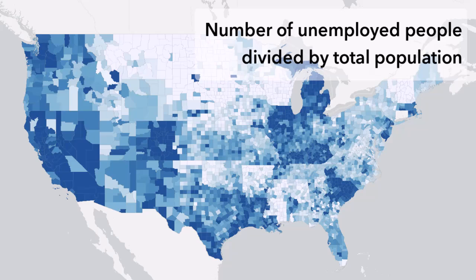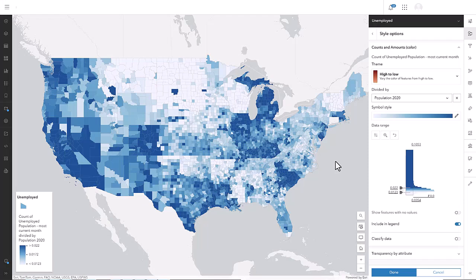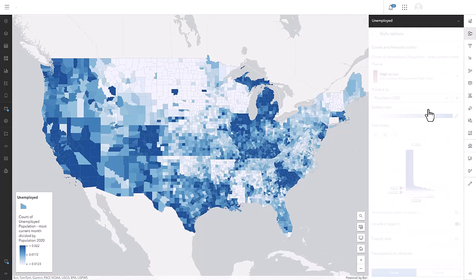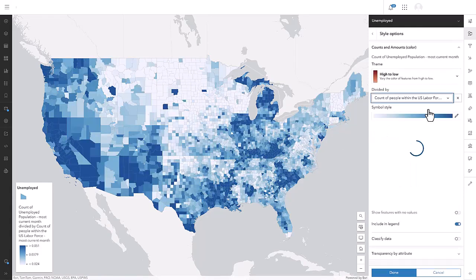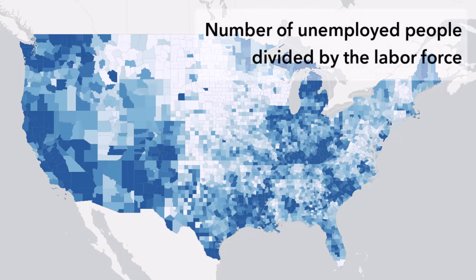Dividing by the total is also a very common way to normalize choropleth maps. But when I stop to think a little further about unemployment, I realize that not everyone in that total population is eligible to work. Maybe a better value to divide by would be the total labor force. If I do that, I finally get the map I want — a map of the unemployment rate, where comparisons across counties are meaningful.